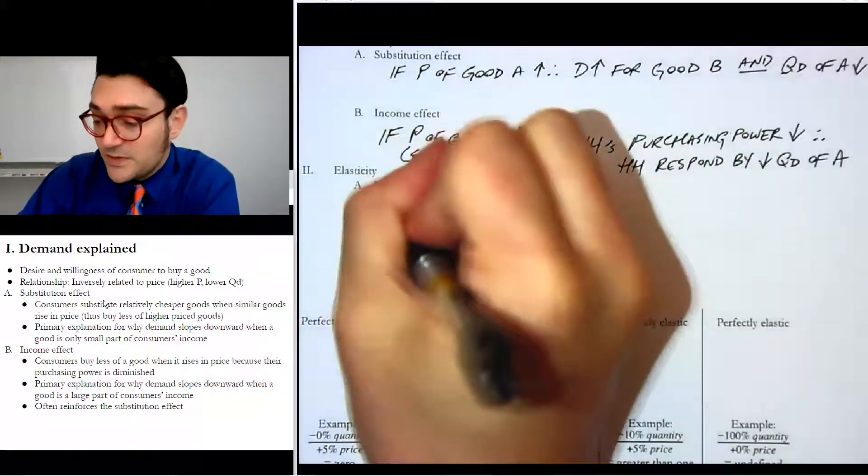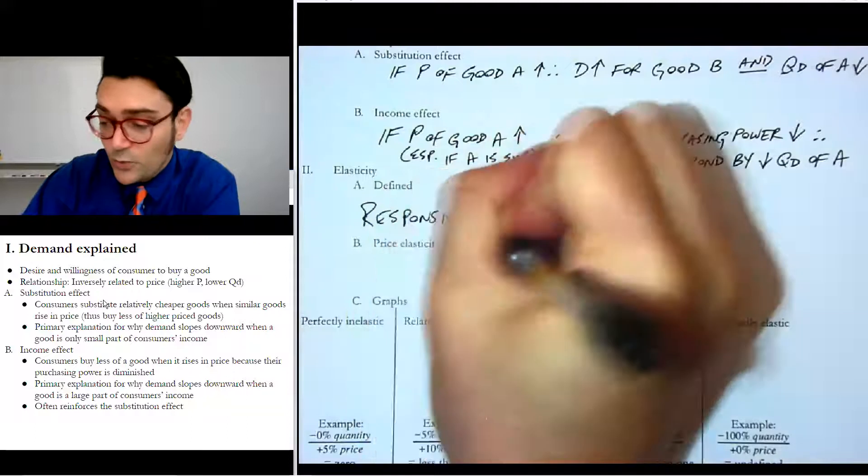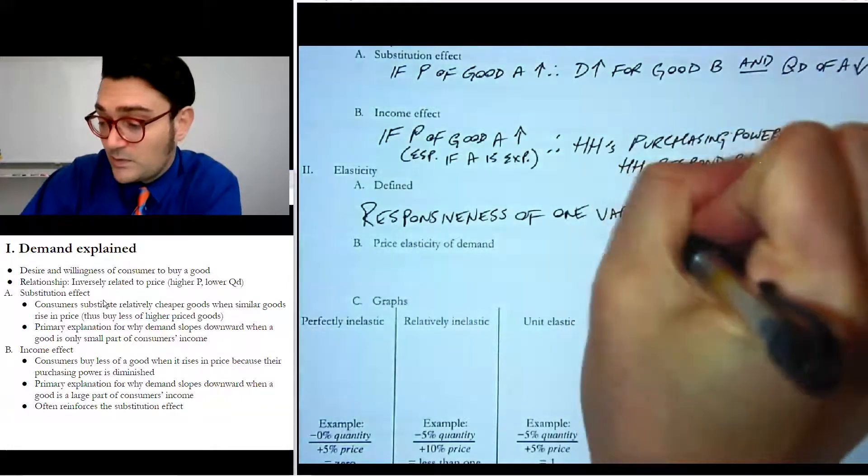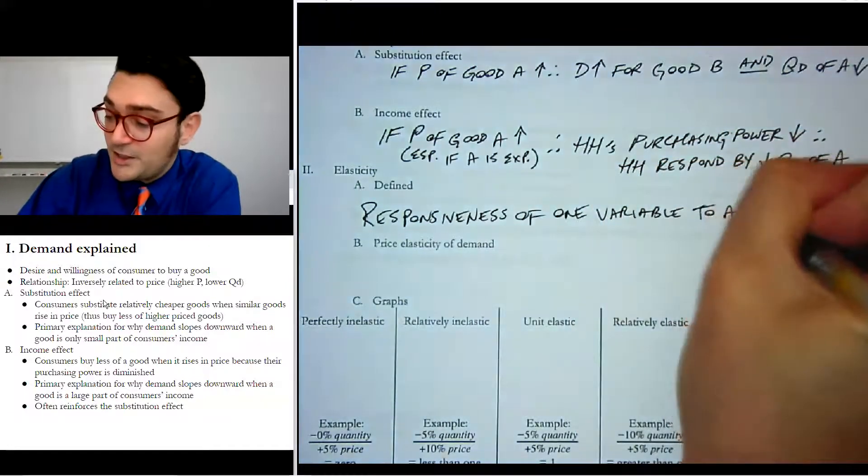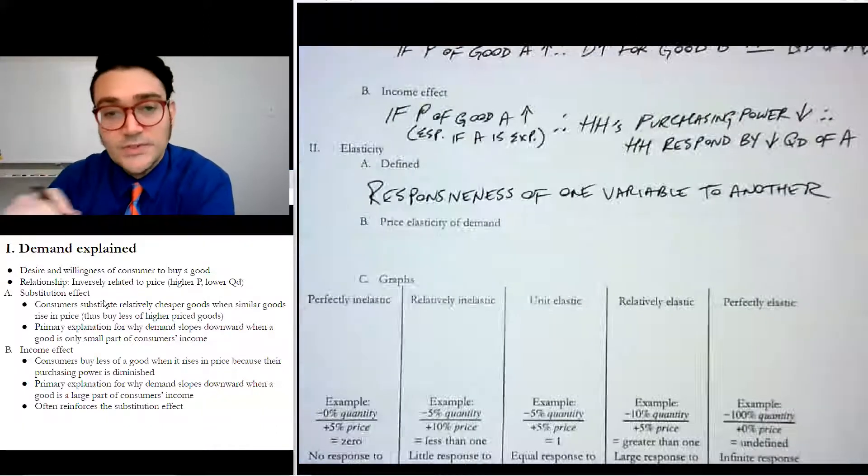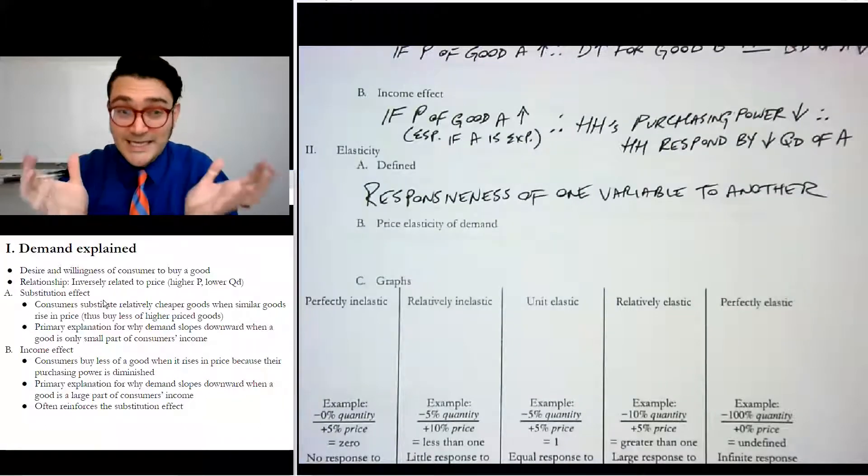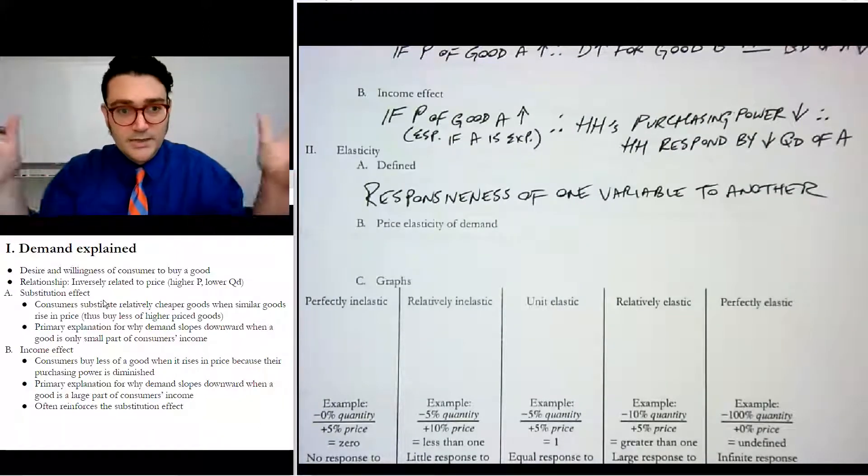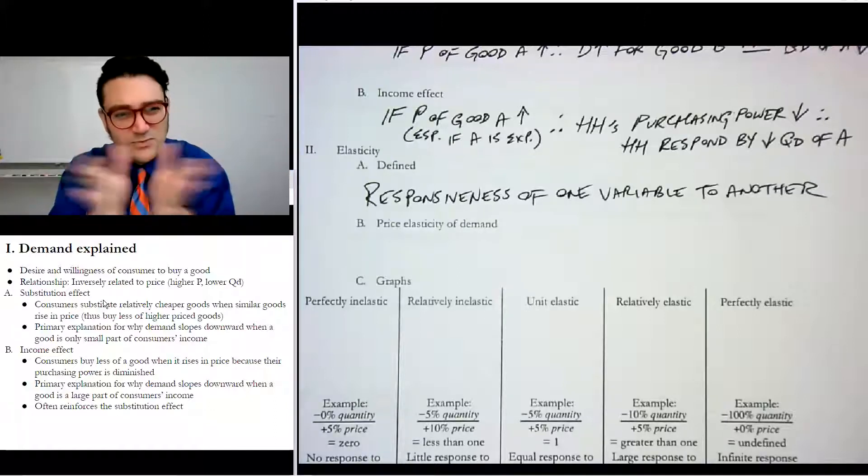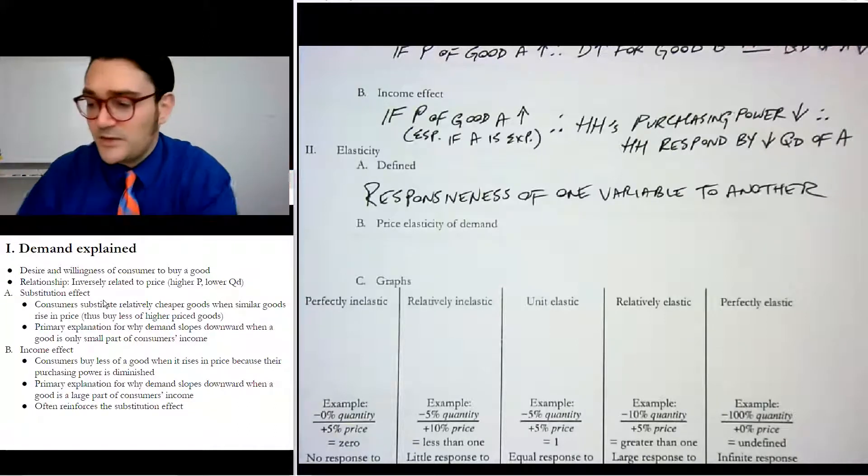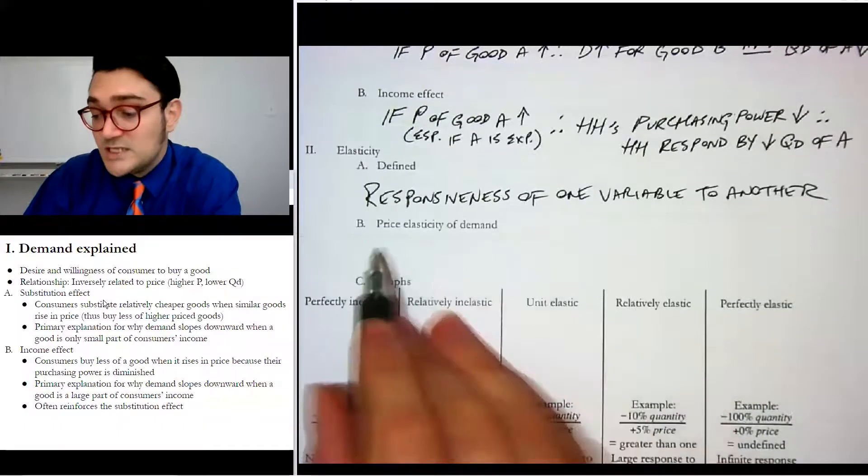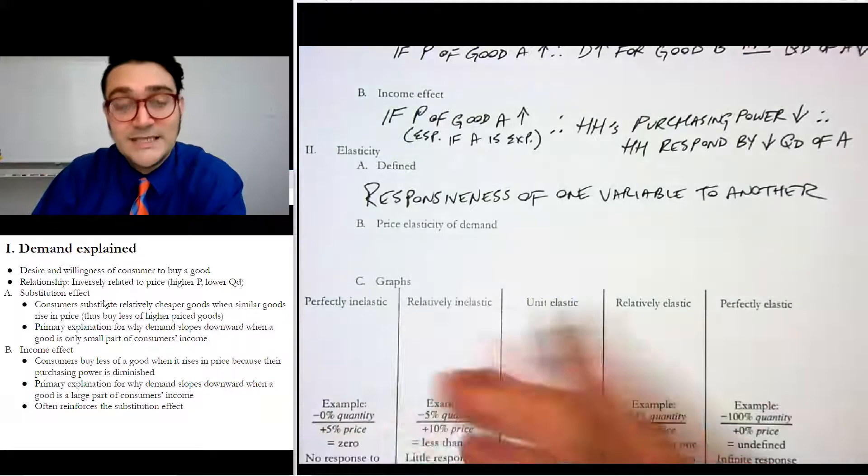Elasticity is the responsiveness, or we can say the relationship, of one variable to another in economics. So it's really just describing the relationship between two variables. And we would say that if they're really strongly related, then it's really elastic. We have a big kind of like band, like a spring. And if they don't really relate to each other, then it's really tight and it doesn't really cause that much of a response. Now, the two variables we'll always know based on the name of the elasticity.